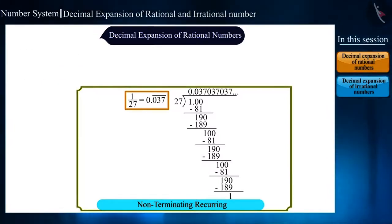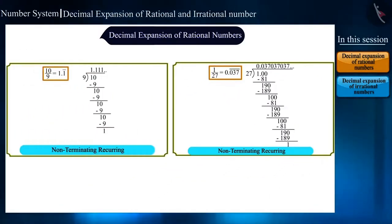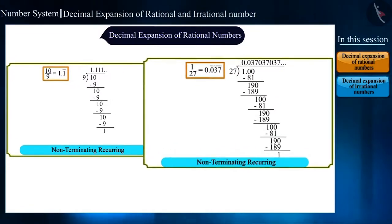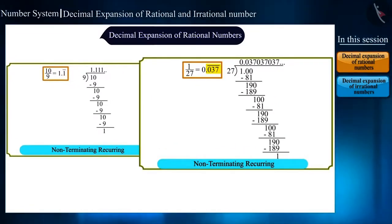Friends, can you tell what is the difference between examples 2 and 3? In example 2, only one number is repeating. But, in example 3, a group of digits are repeating.